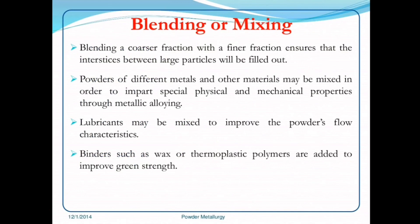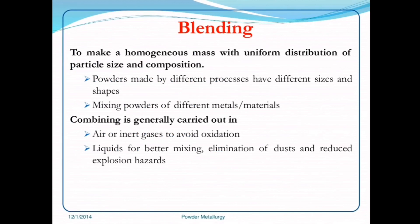Blending a coarser fraction with a finer fraction ensures that the interstices between large particles will be filled. Powders of different metals and other materials may be mixed to impart special physical and mechanical properties through metallic alloying. Lubricants may be mixed to improve the powder's flow characteristics. Binders such as wax or thermoplastic polymers are added to improve green strength and to make a homogeneous mass with uniform distribution of particle size and composition. Powders made by different processes have different sizes and shapes.